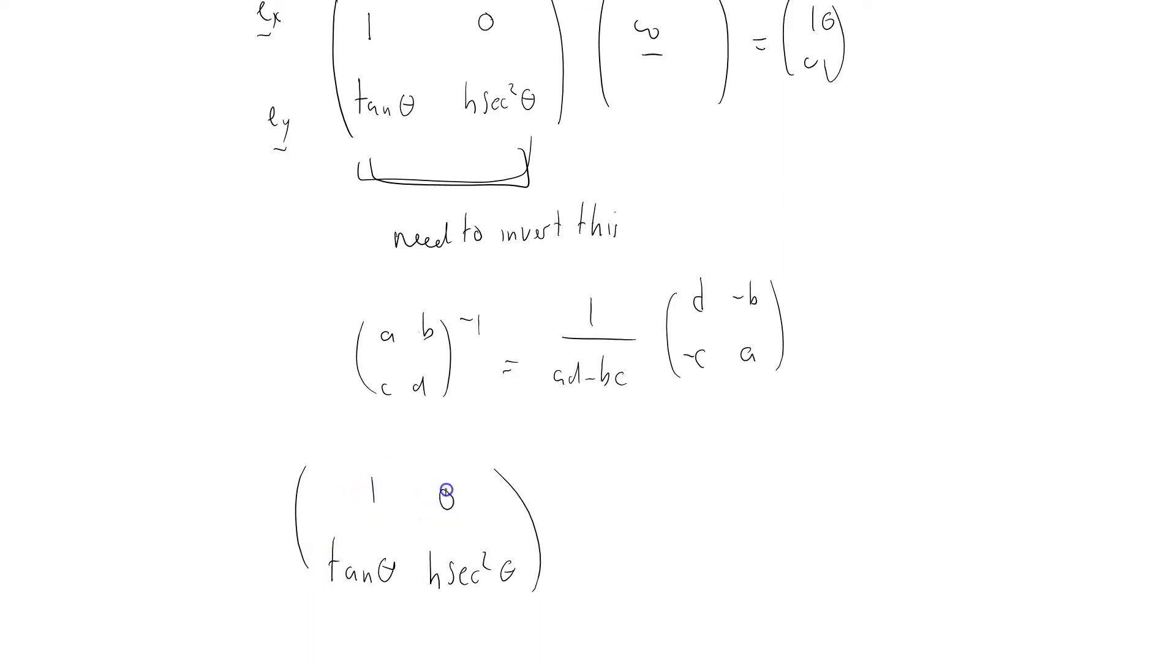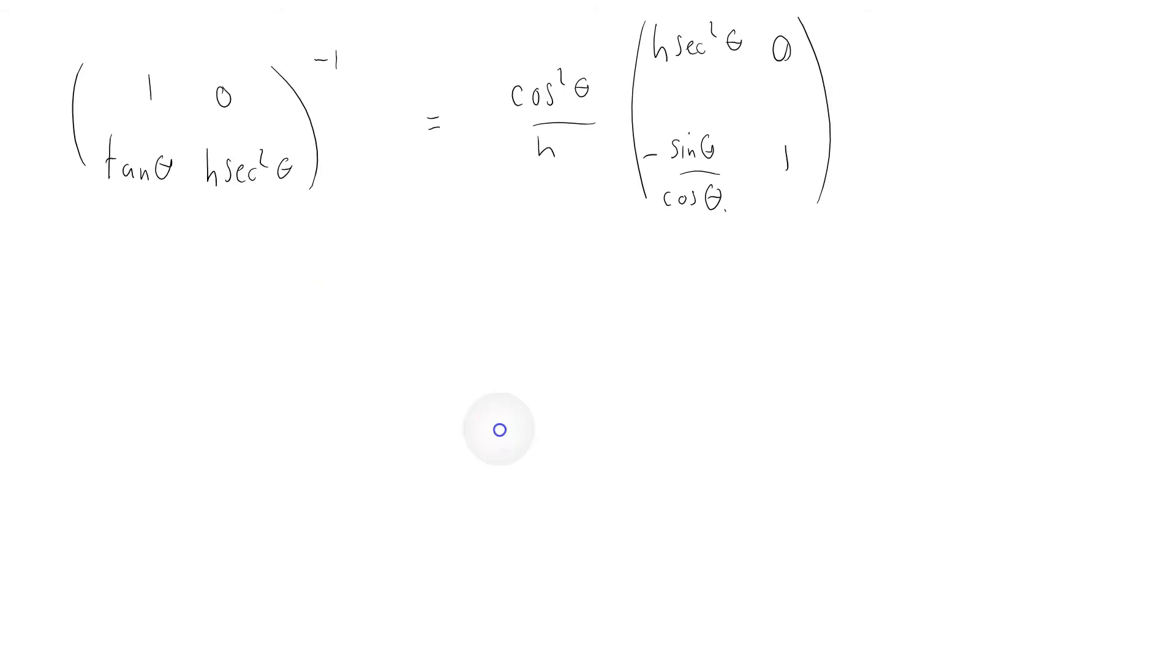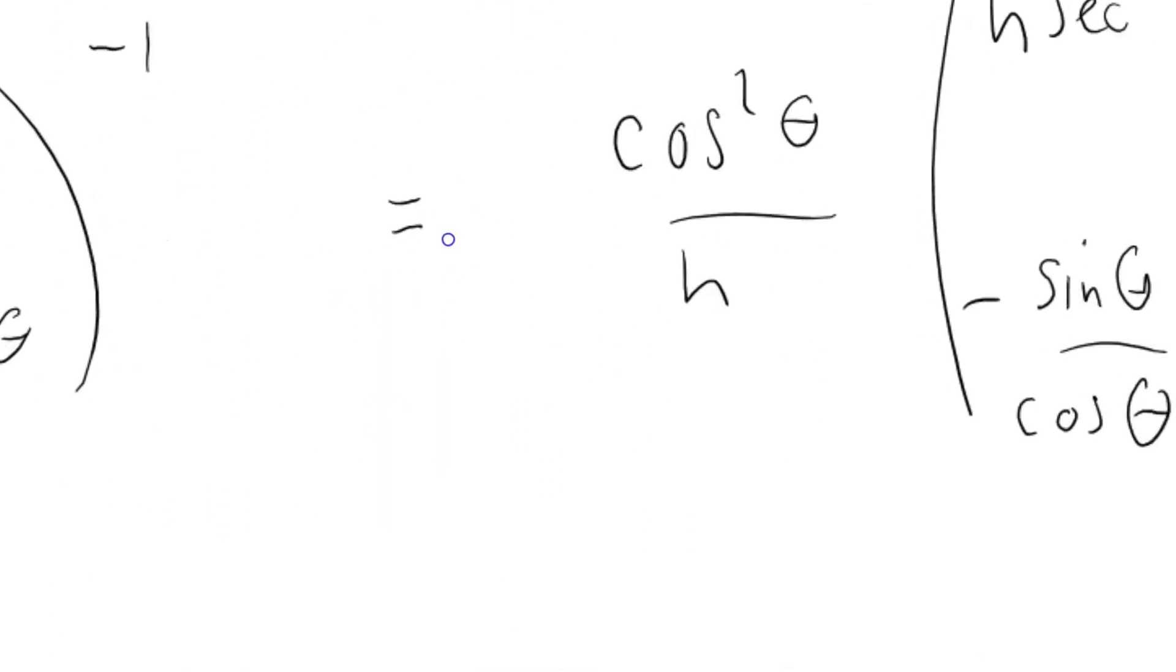Which is what we're trying to do, equals 1 over the determinant. The determinant is just h sec²θ, so that's just cos²θ/h, times swap and change. So that's h sec²θ and 1, because we've swapped these elements over here, and change the sign of the minor diagonal. So 0 goes to 0, and that's minus tan θ, which I'm going to write as -sin θ/cos θ, just because I can.